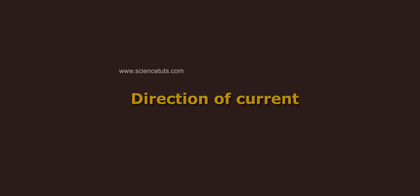Direction of current. As a matter of convention, the direction of flow of positive charge gives the direction of current. This is called conventional current. The direction of electrons gives the direction of electronic current.